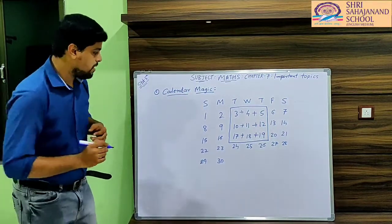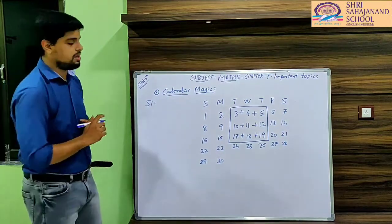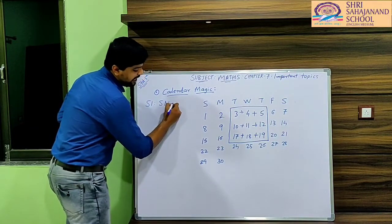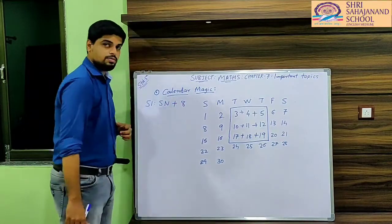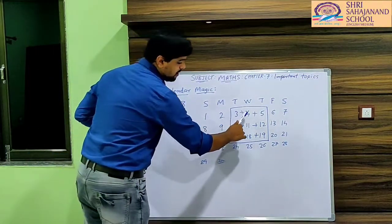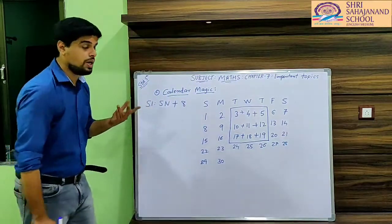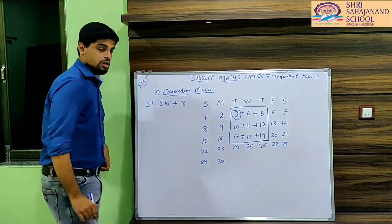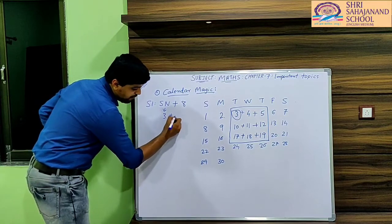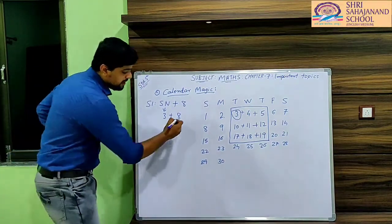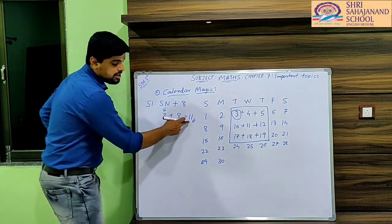That trick includes 2 steps. In step 1, they are telling us to take the smallest number. In these 9 numbers — 3, 4, 5, 10, 11, 12, 17, 18, 19 — which is the smallest one? Yes, 3 is the smallest one. So in the first step, we take the smallest number, which is 3, and we add 8 to it. So 3 plus 8 equals 11. Step 1 result is 11.